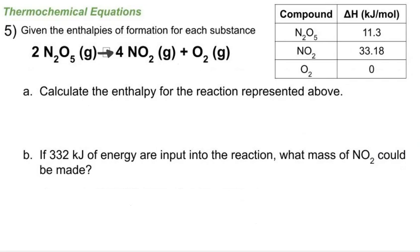On number five it says given the enthalpies of formation for each substance, and it gives those in a table, and it gives us the reaction. Calculate the enthalpy for the reaction represented above, and so we just need to do our enthalpies of our products minus our enthalpies of our reactants.